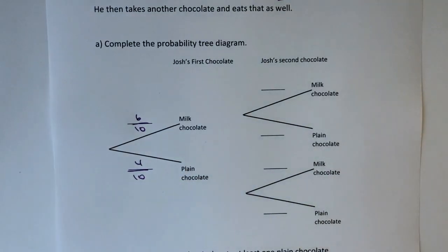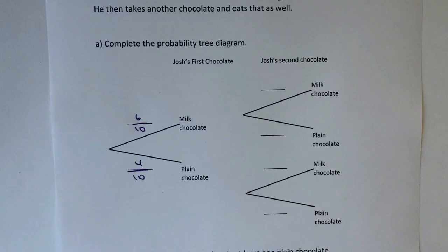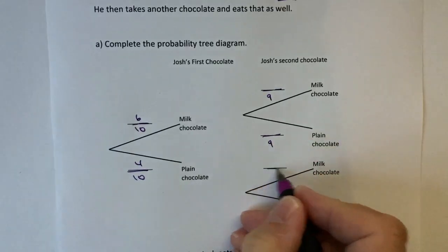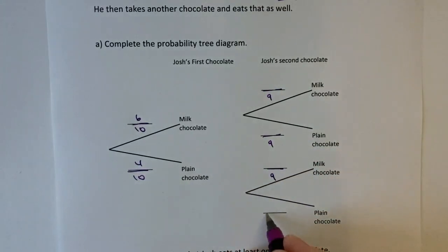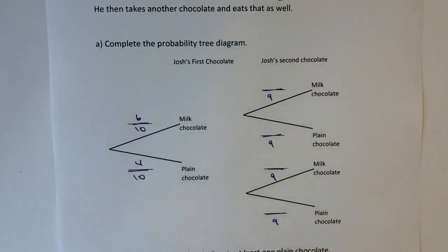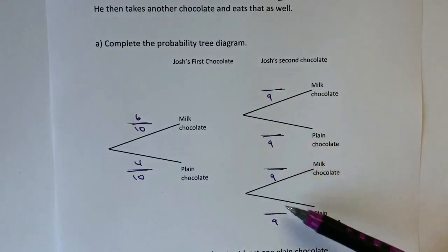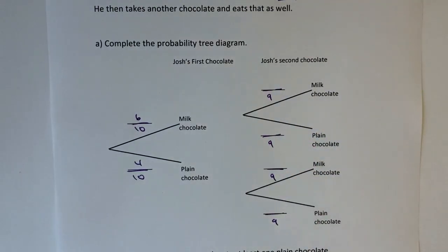The difficulty for this particular diagram is that he eats one of these chocolates, so therefore the second time that he eats a chocolate there's only actually nine of them left in the box. The way I generally tend to do this is to figure out that one's going to go, so I'm going to put them out of nine — it just helps me to remember what I'm going to do.